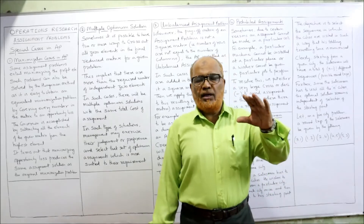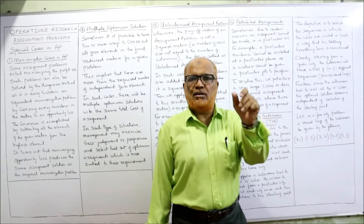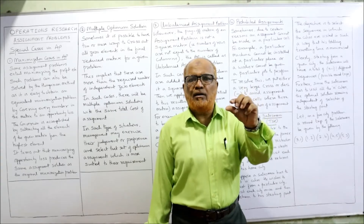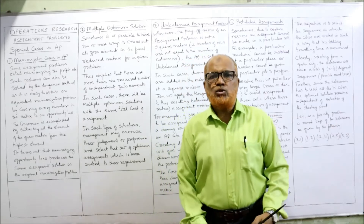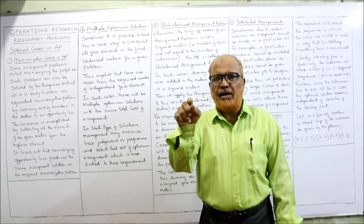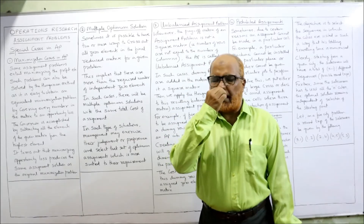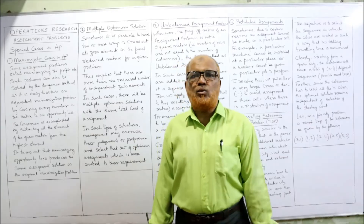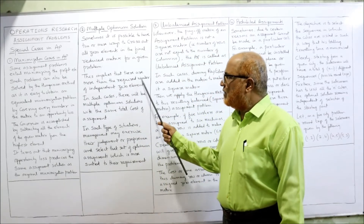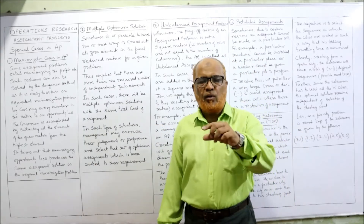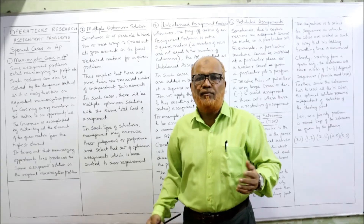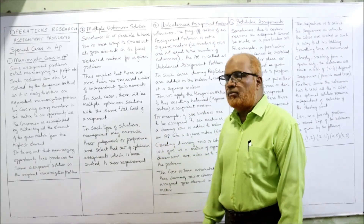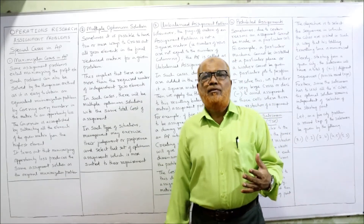In the steps — first row subtraction, second column subtraction, then drawing the minimum number of lines — while making the assignment you may find that rows have more than one zero. When making the assignment, one zero per row is assigned and the other zeros in that column are cancelled. If two zeros exist in a row, you assign one zero and cancel the other. This implies there are more than the required number of independent zero elements, so we have to arbitrarily assign to any one of those zeros. In such cases there will be multiple optimum solutions with the same total cost.